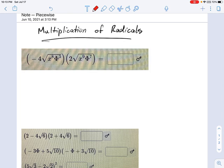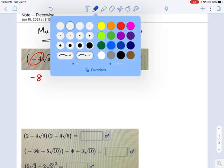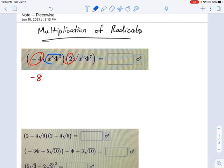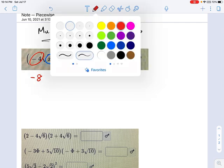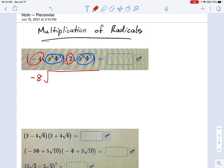What you do in multiplication is anything that's outside the radical sign, the coefficients, you multiply those together. So negative 4 times 2 makes negative 8. And then anything inside the radical sign, you multiply those together too, and they stay under a radical sign. So this becomes negative 8 times a big radical of x to the 8th power times phi cubed times x to the 9th power phi to the 7th.